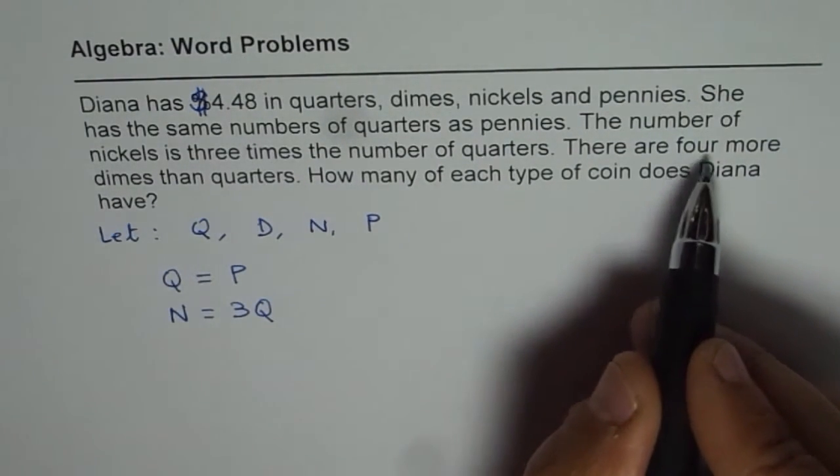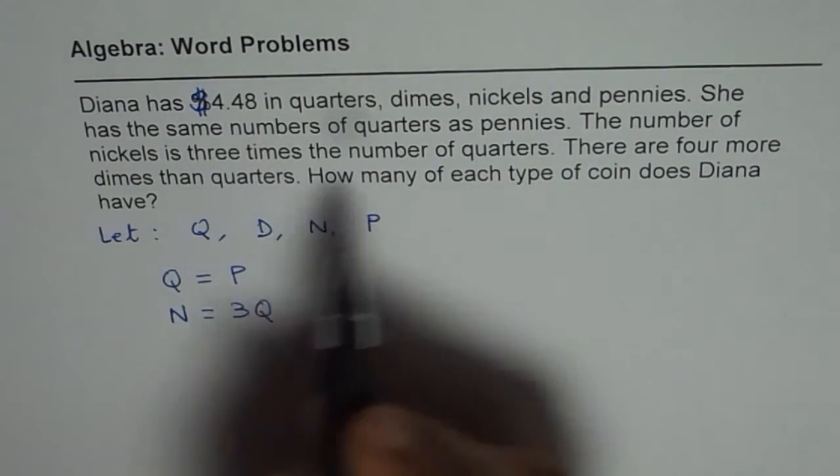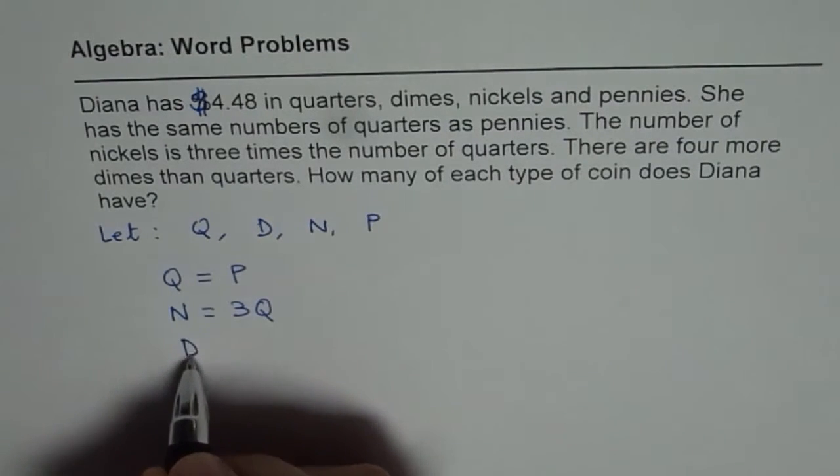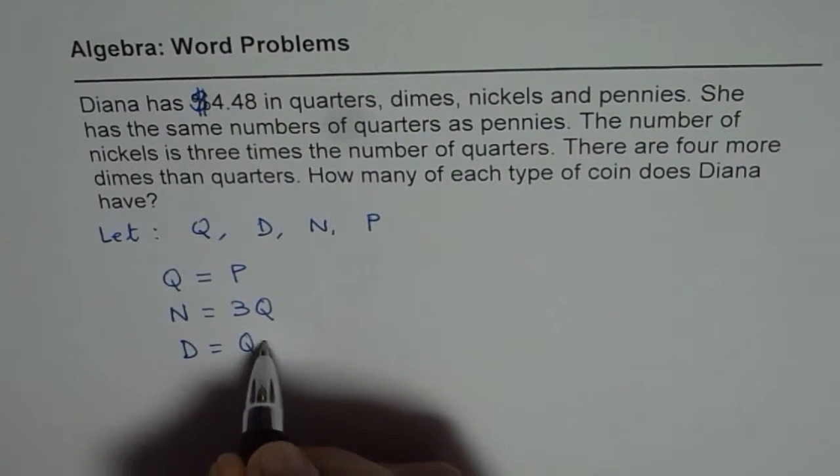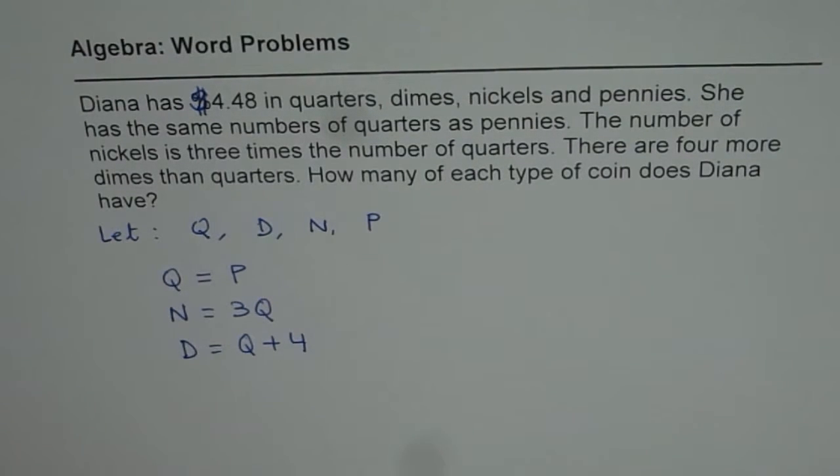There are 4 more dimes than quarters. So the dimes are 4 more than quarters, D equals Q plus 4. So we get all these equations.